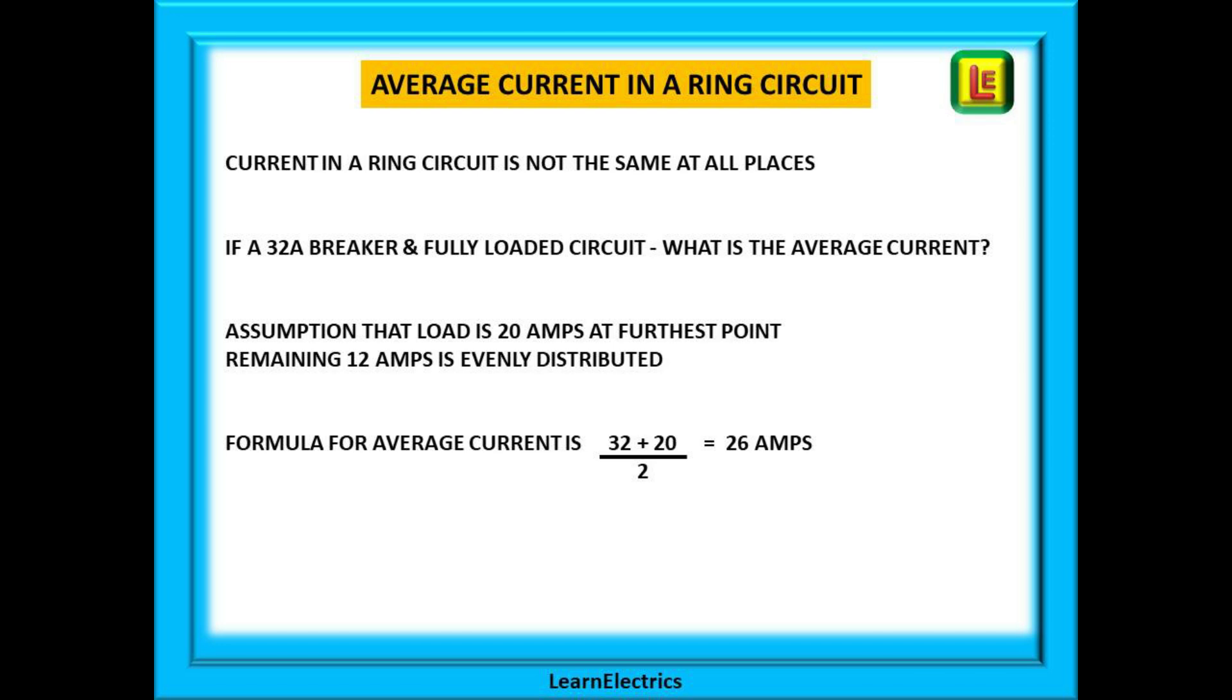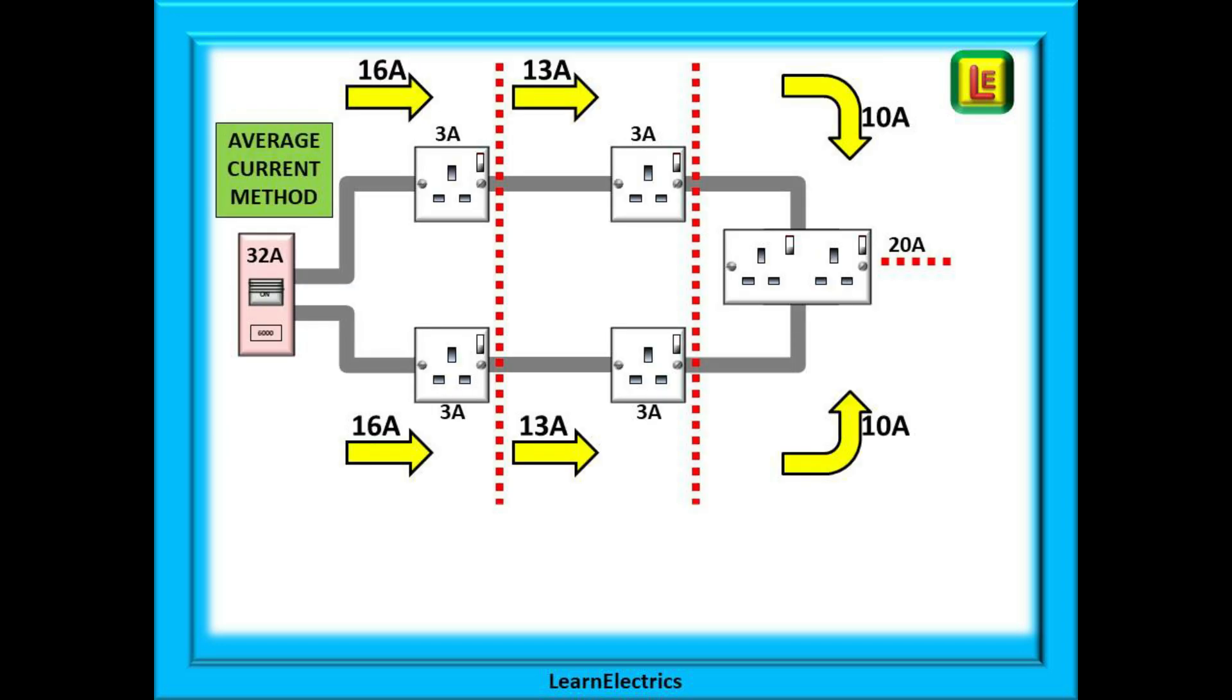The full load current plus the current demand at the furthest point are added together and then divided by 2. This gives us 32 plus 20 which is 52, divide 52 by 2 and we have our average current of 26 amps.